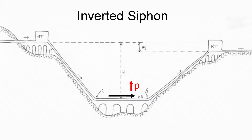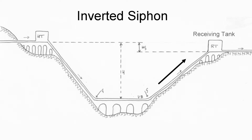Additionally, the necessity to create a watertight seal for the siphon made cleaning the pipes very difficult. After crossing the valley, the water climbs the opposite side and the kinetic energy is converted back into potential energy until it eventually rests in the receiving tank.